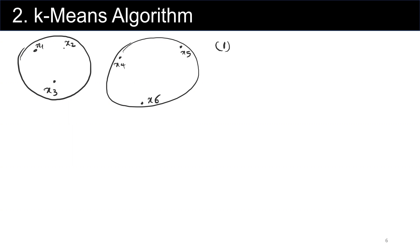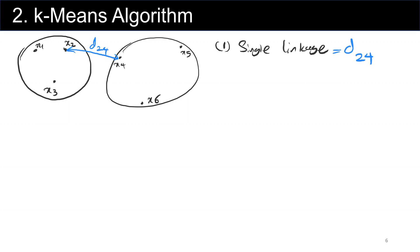The first approach is called single linkage. Single linkage refers to the closest point in each cluster. In our example, x sub 2 and x sub 4 are the closest points, so this distance is d(2,4). Single linkage simply finds the closest points between the two clusters.